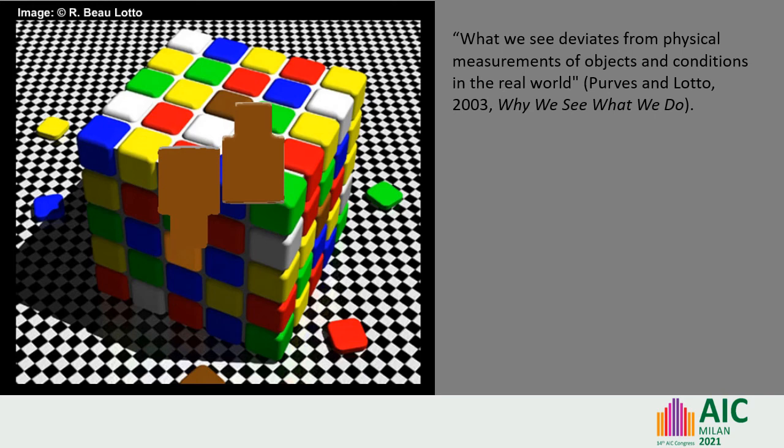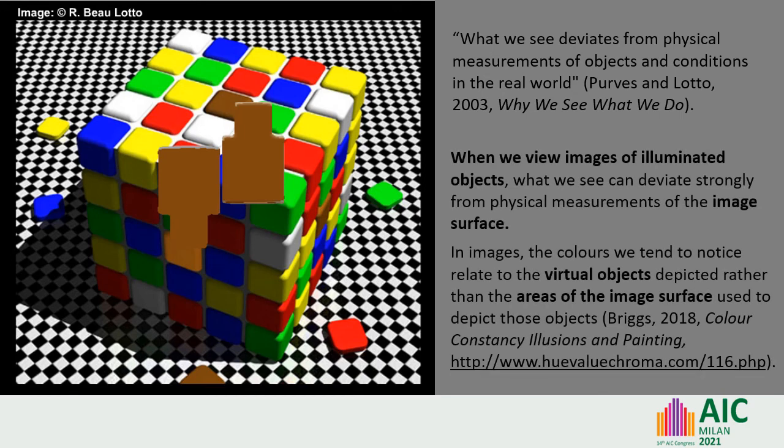Alarmingly, both central tiles are depicted using physically matching image areas. Pervies and Lotto took illusions such as this one to demonstrate that what we see deviates from physical measurements of objects and conditions in the real world. While this is of course true to a degree, what these illusions specifically reveal is that when we view images of illuminated objects, what we see can deviate very strongly from physical measurements of the image surface.